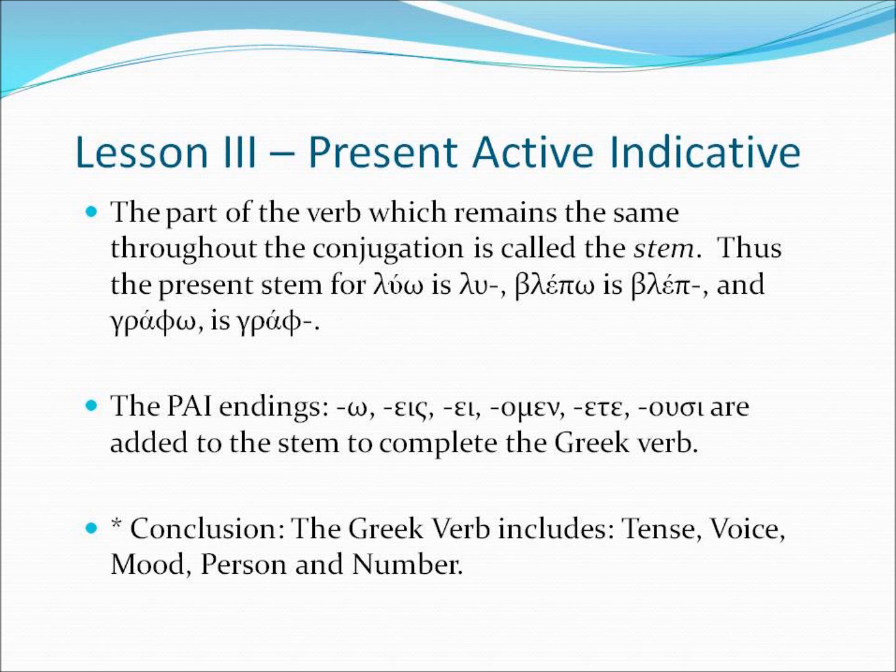The present active indicative endings — o, ace, a, amen, ete, usi — are added to the stem to complete the Greek verb. It's easier not to memorize luo, luase, luay individually, but to remember the endings: o, ace, a, amen, ete, usi. Write these down on your flashcards, memorize them, and then all you need to do is identify the stem and add those present active indicative endings to conjugate it. Conclusion: the Greek verb includes tense, voice, mood, person, and number. So when I see luo, I see a present active indicative — tense, voice, and mood — first person singular — person and number — which translates as I loose, or I am loosing.